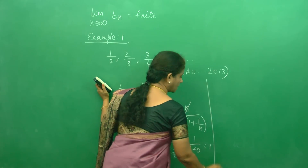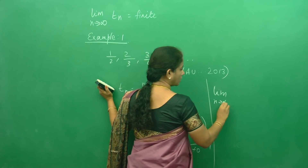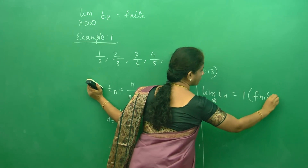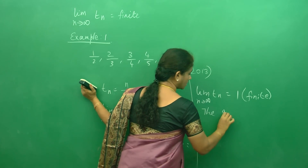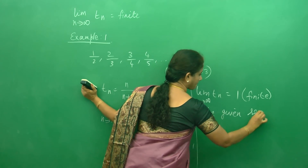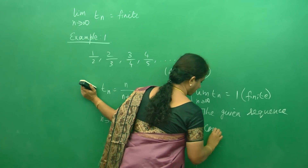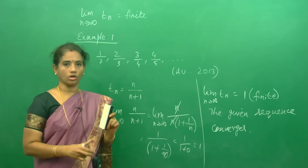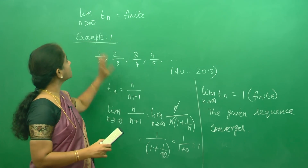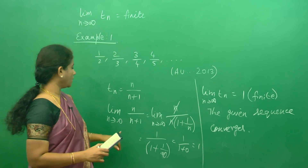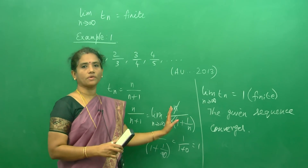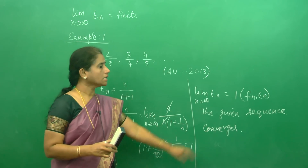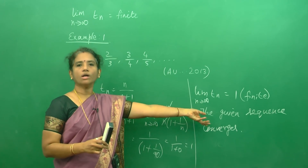So you complete it like this: limit as n tends to infinity of Tn is 1, which is finite. Because it is finite, the given sequence converges. For finding whether a sequence is convergent or not, we write the nth term using common sense, find the limit as n tends to infinity by taking the highest power of n out from numerator and denominator, apply the limit, and if it is finite it is convergent; if not, it is divergent.